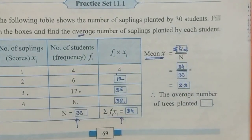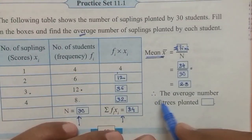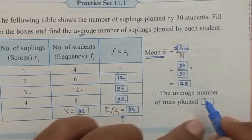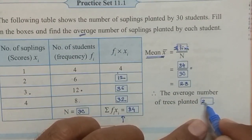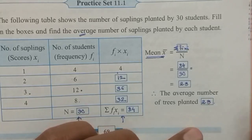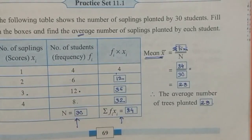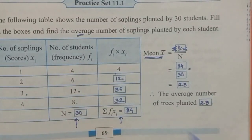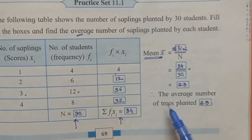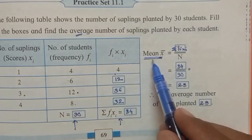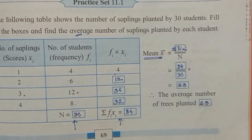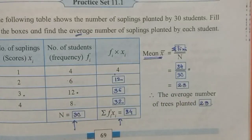So therefore, the average number of trees planted is 2.8. Ye average hai — aisa nahi ke har ek bachche ne exactly 2.8 trees lagaye hain. This is called the average, or mean x̄.